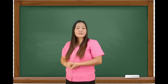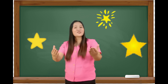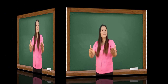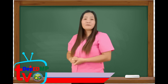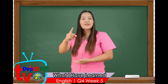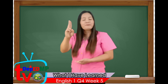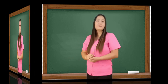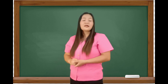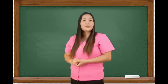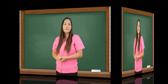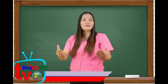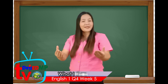Did you color the correct star? Then, three stars for you! Today, you have learned how to give one to two-step directions. Now, you are going to do another activity. You are going to role-play the dialogue in 'What I Can Do.'